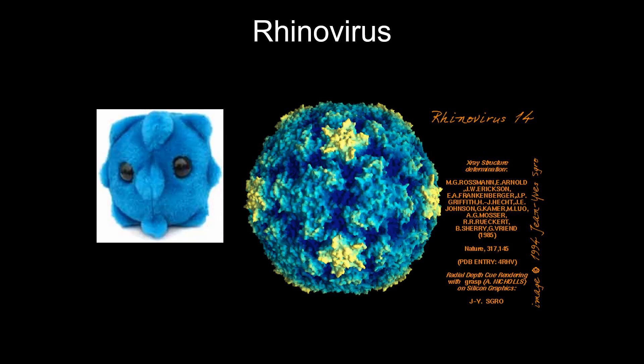The model organism for this chapter is the rhinovirus. What does it cause? The common cold. What kind of virus is it? A naked virus — so very difficult to kill. What is the route of entry? It's a respiratory infection.